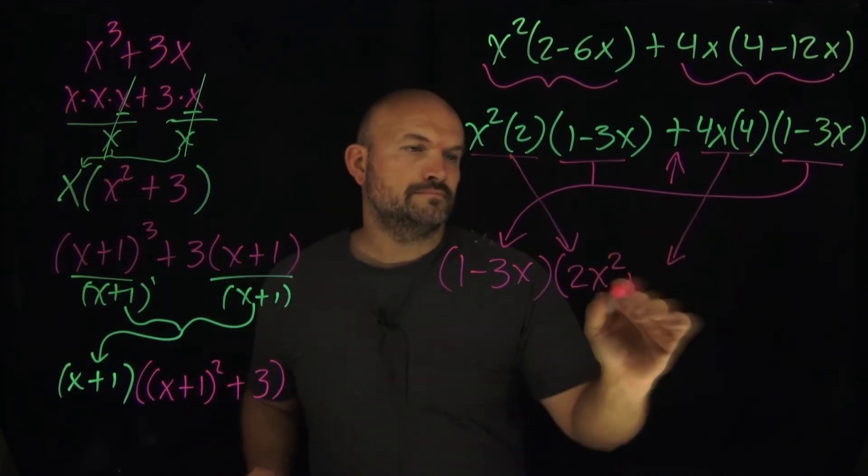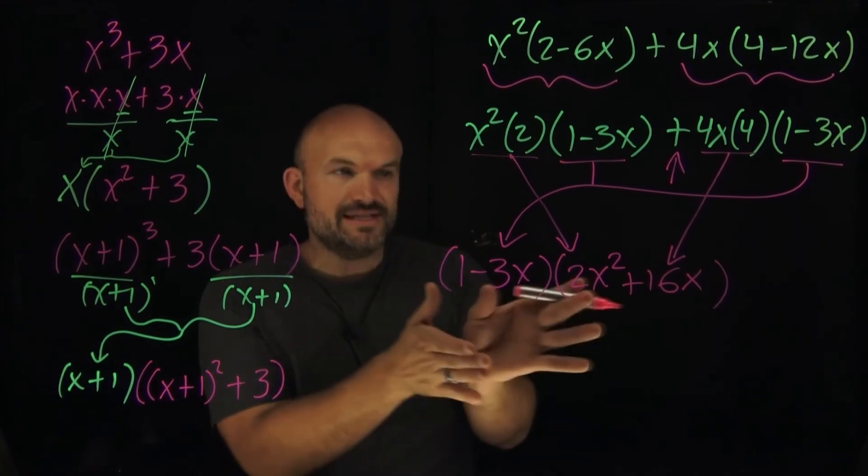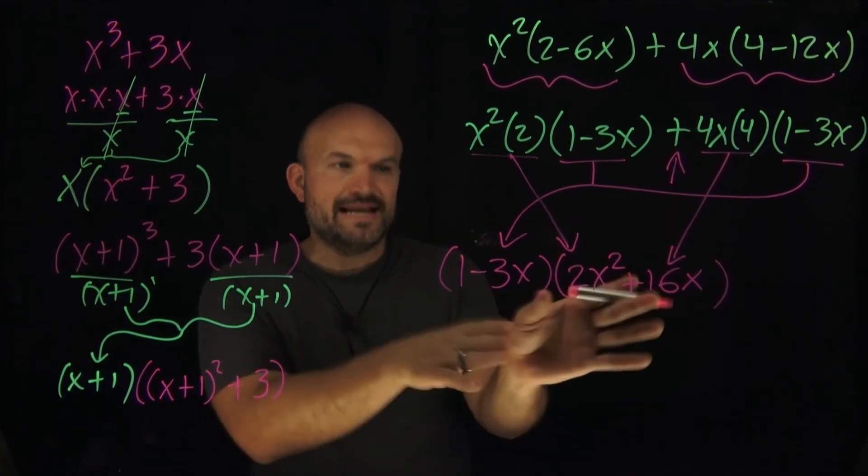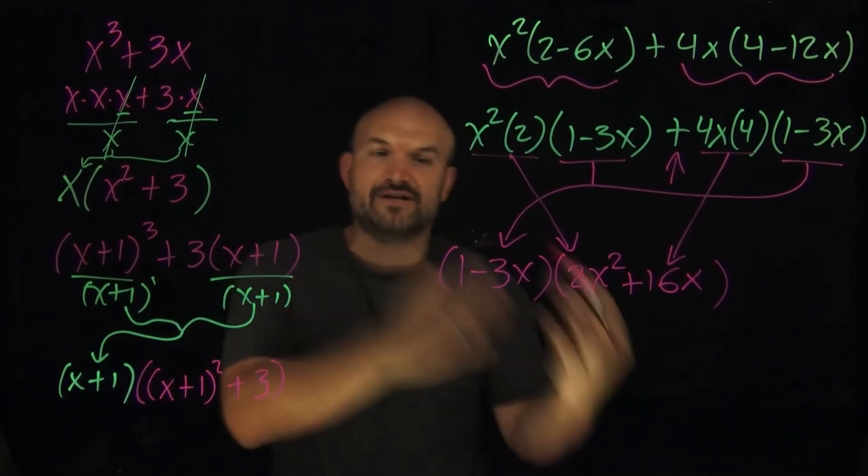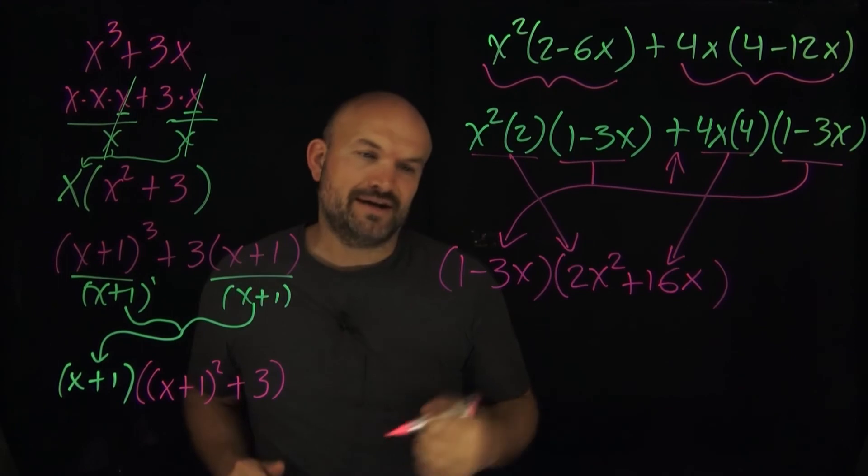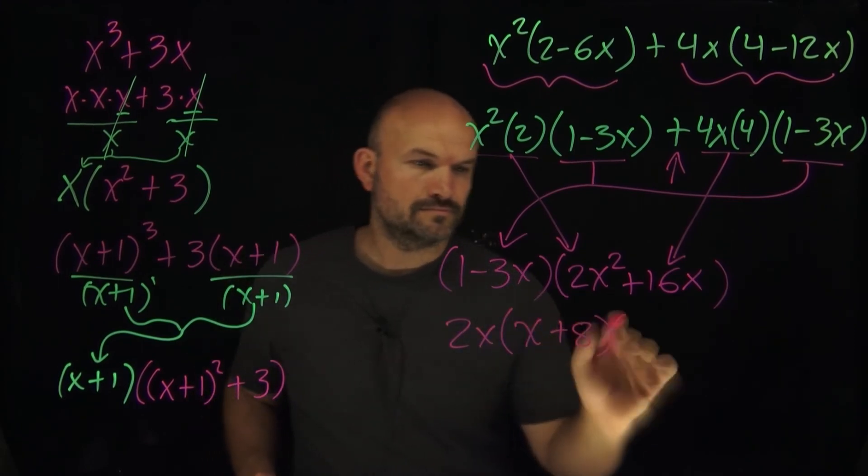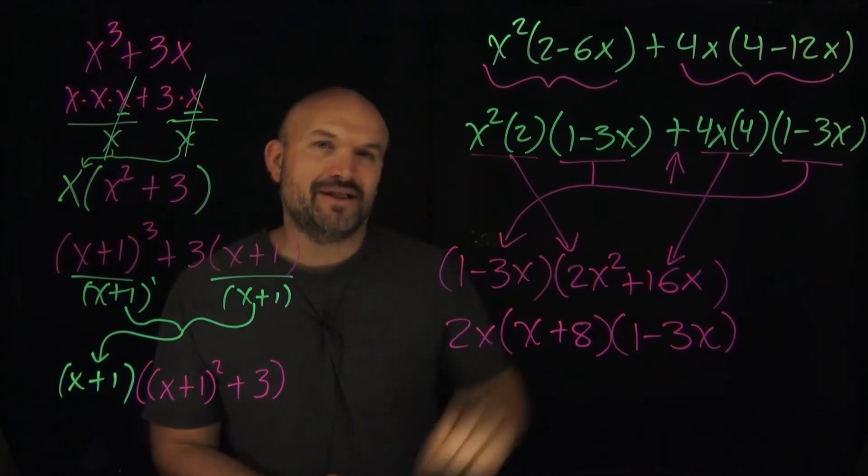And so now you can see that, yeah, you could have done this. Now we can do the second step and you say all right, well now these both share a 2 and an x, so I can factor out that GCF and now I can get to my final answer. And voila, now we have factored this polynomial by grouping.